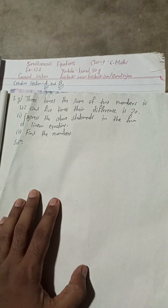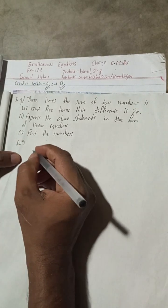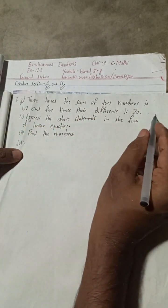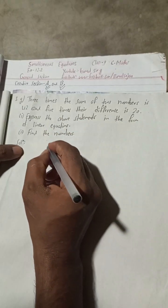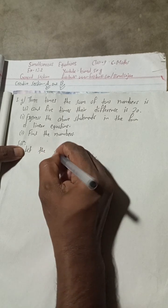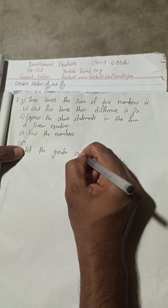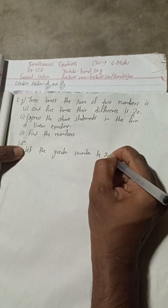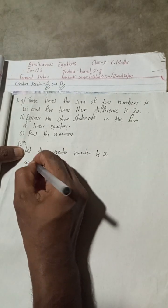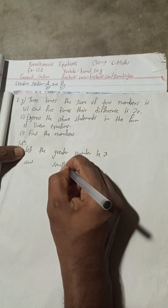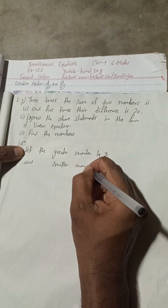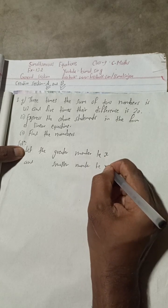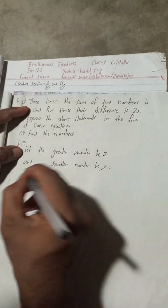Let's begin the solution. The problem states: three times the sum of two numbers is 42, and five times the difference is 20. Let the greater number be x and the smaller number be y.